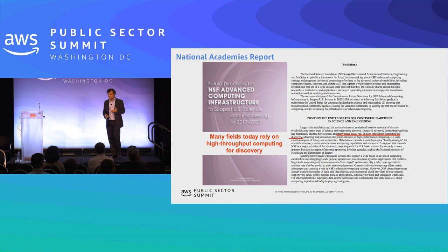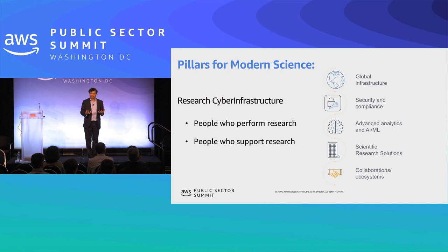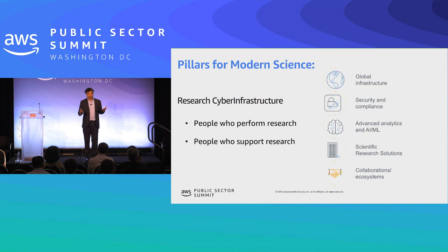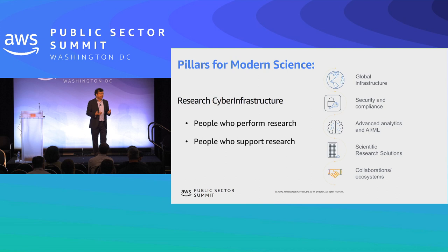For any research or modern science, there are two kinds of users: people who perform research and people who support research — researchers versus research infrastructure, CIOs and CTOs. In order to do science, take the Higgs Boson study as an example: you need global infrastructure to enable collaboration, security and compliance, advanced analytics, as well as solutions co-developed with researchers, and you need to foster collaboration and ecosystem.